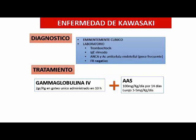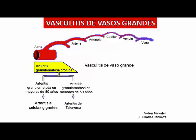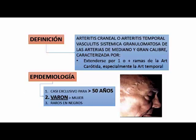En vaso grande ya tenemos las dos causas, que son causas de fiebre de origen muy prolongado: la arteritis de células gigantes y la arteritis de Takayasu. La arteritis de células gigantes es una arteritis craneal, muchas veces temporal. Es una vasculitis sistémica granulomatosa de arterias de mediano y grandes vasos. Suele extenderse por una o más ramas de la arteria carótida, especialmente la arteria temporal. Es casi exclusivo de pacientes adultos mayores de 50 años, más en varones que en mujeres, y muy raro en pacientes de raza negra.